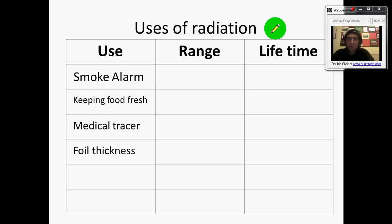Foil thickness. Believe it or not the thickness of a piece of foil is controlled using radioactive sources. Now you want it to be thin, if it gets too thin it'll break. If it gets too thick it won't be very flexible and you'll use more aluminium and it's going to cost the company more money. And they actually use a radioactive source to control how thick or thin it becomes. So do you want it to be a long range, short range, long lifetime, short lifetime?